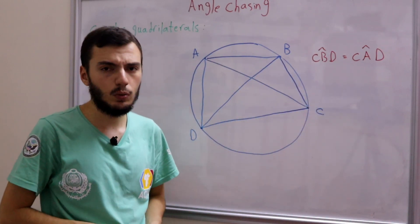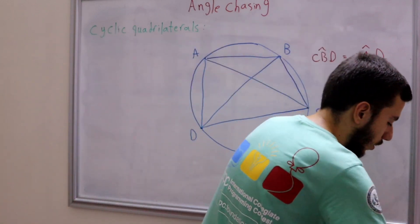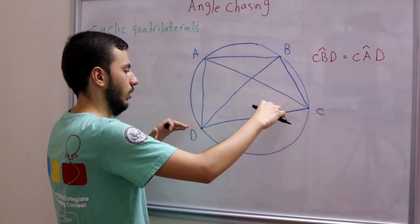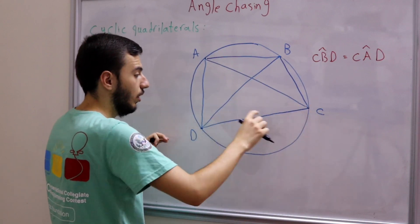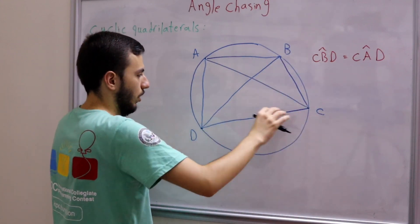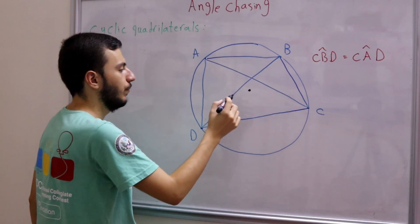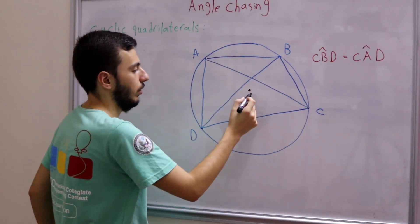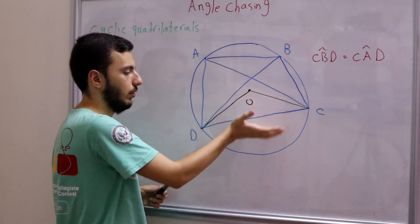To prove property two, we use the same approach: introduce O, the center of the circle. The center lies either on the same side as A and B with respect to line DC, or the opposite side. Drawing OC and OD, since O is the circumcenter of triangle BCD, angle COD equals 2 times angle CBD. We discuss one case here; the other case follows similarly.